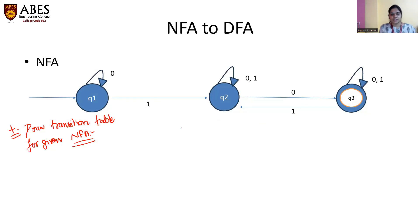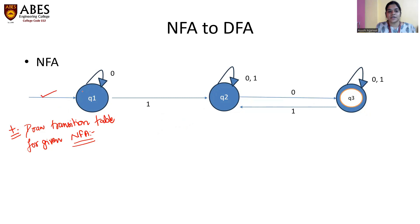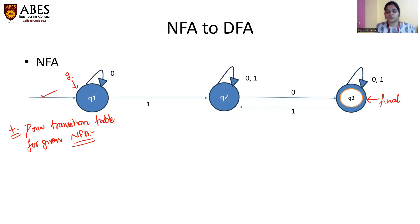Now let's draw the transition table for this given NFA. We have three states. First, by viewing the transition diagram, try to identify which is the initial state and which is the final state, then start drawing the transition table. Q1 has an empty arrow, so it is the start state. Q3 is encircled with a double circle, so it is the final state. Q2 is an intermediate state.